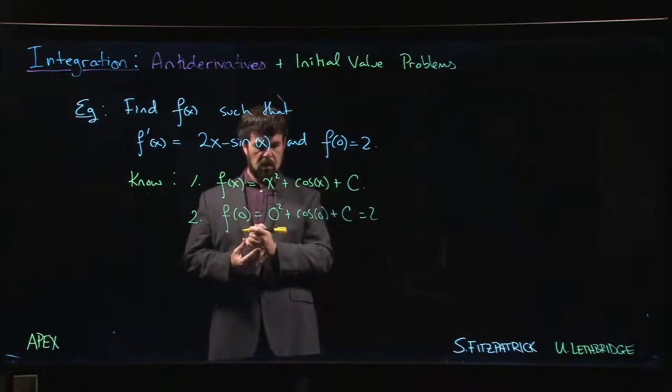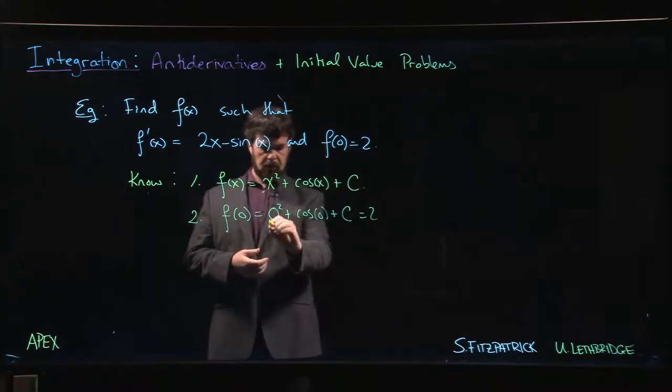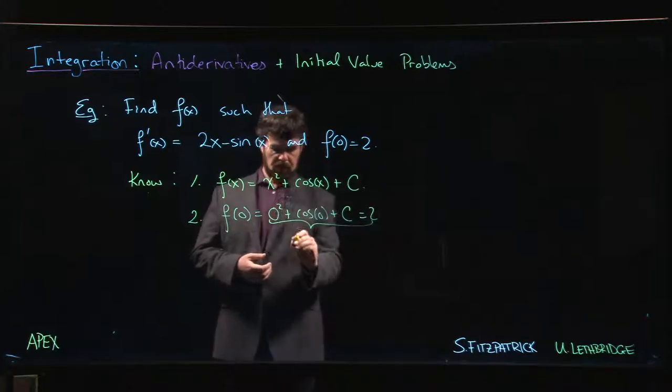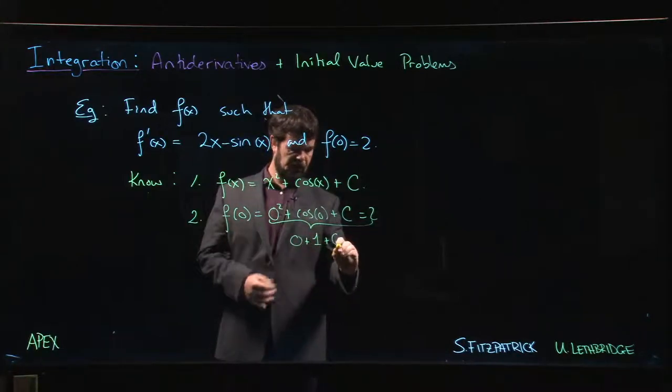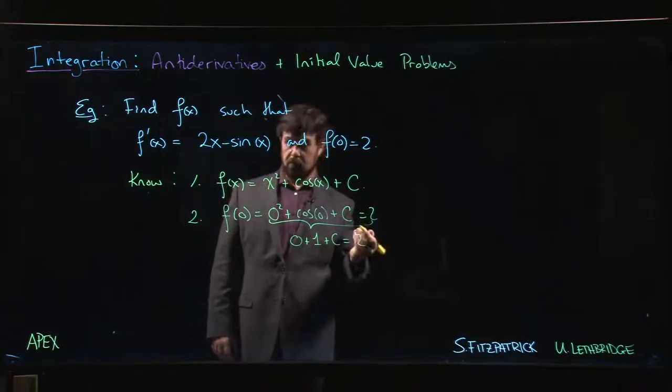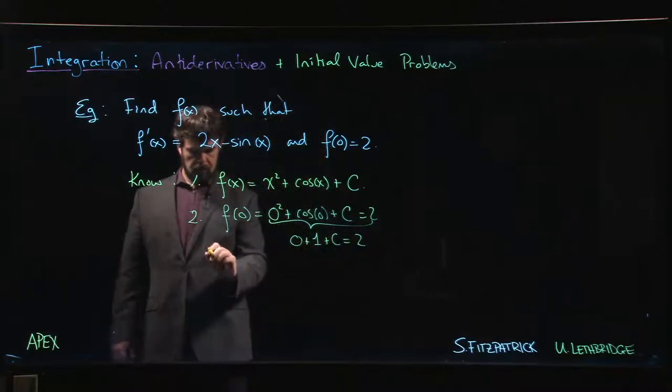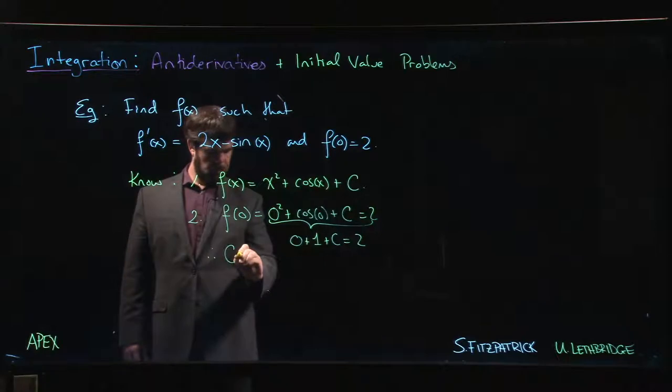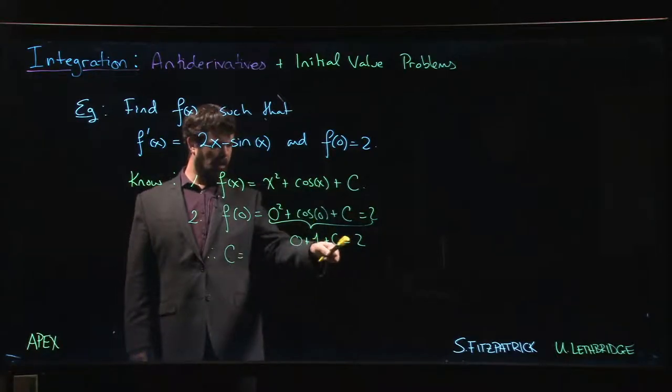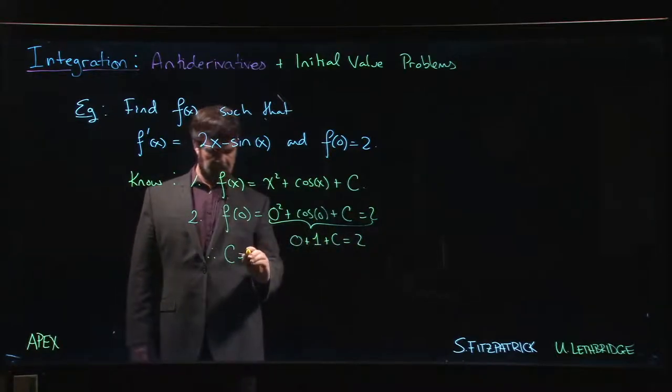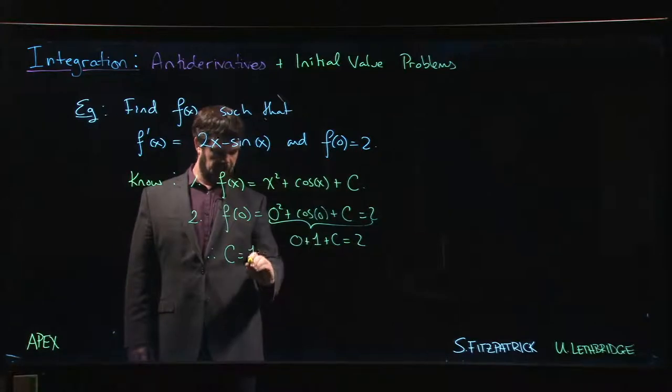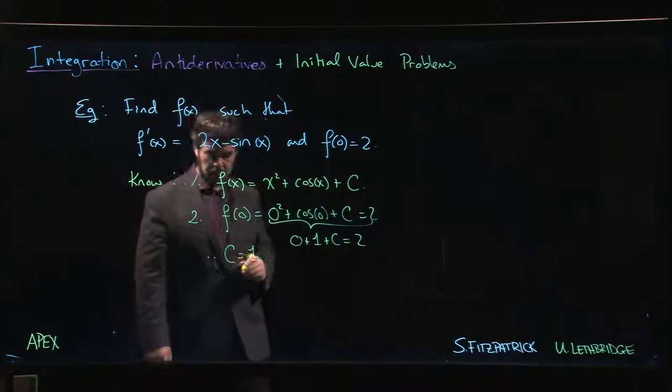2. So then we say, okay, what does that mean? 0 + cos(0) = 1 + C has to equal 2. Therefore, let's see, one plus what equals two? Oh, we know that—that goes all the way back to Barney the dinosaur. One plus one is two, there we go. So C = 1, and that means